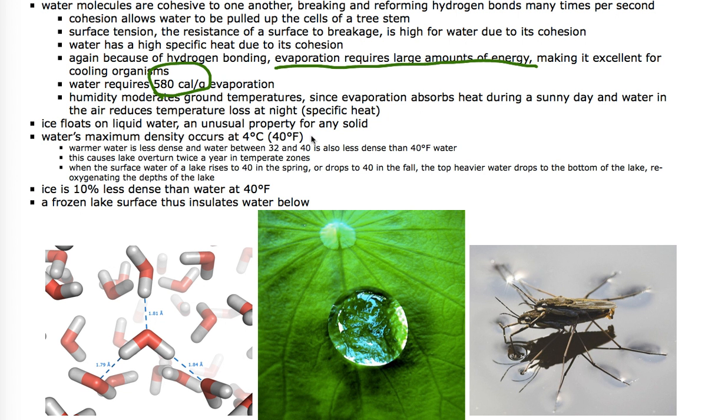Ice floats on liquid water, which is totally weird. Water's maximum density is actually not when it's frozen, but when it's 40 degrees Fahrenheit or 4 degrees Celsius. That is such a weird property. Ice is about 10 percent less dense than water at 40 degrees Fahrenheit.